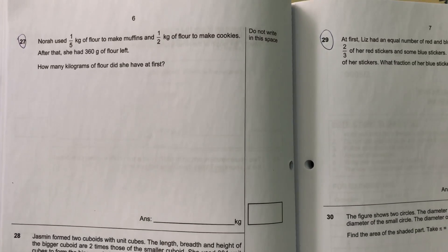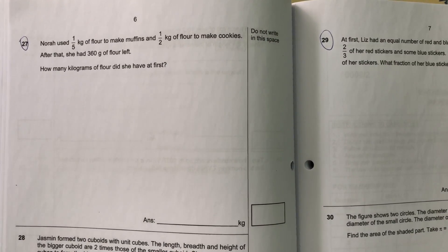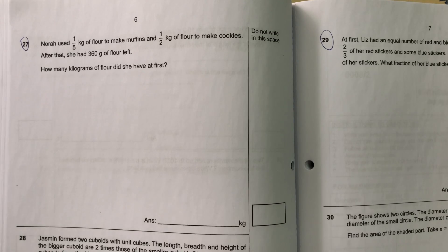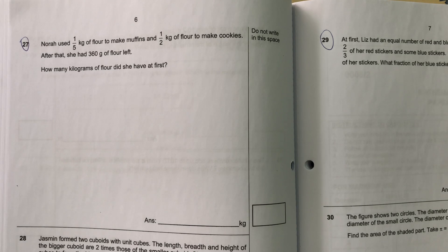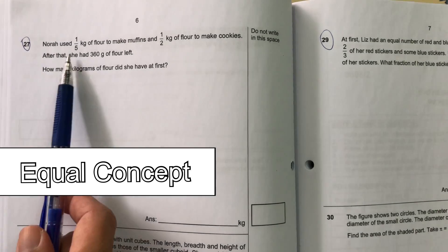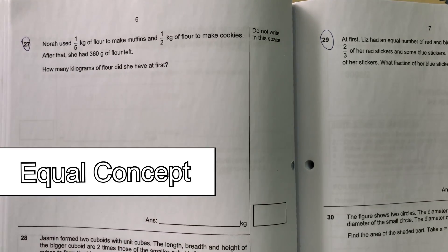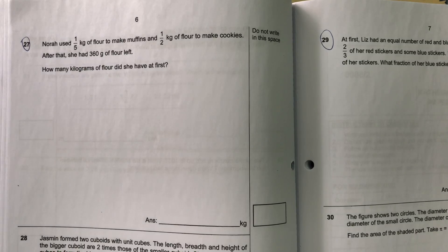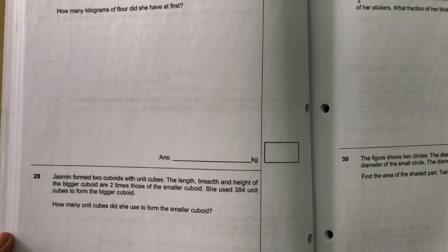The next heuristic that I saw is here. This particular one - Nora used 1/5 kilogram of flour to make muffins, half kilogram to make cookies. What type of heuristics is this? This is an equal concept where you have to make the denominator the same because both the five and the two, they are referring to the same packet of flour.